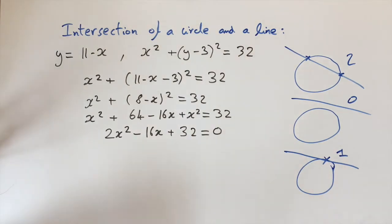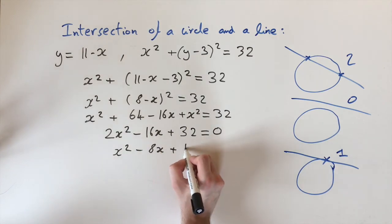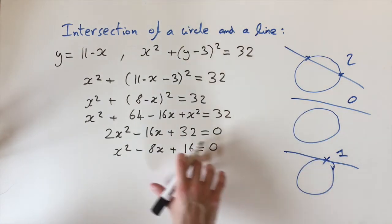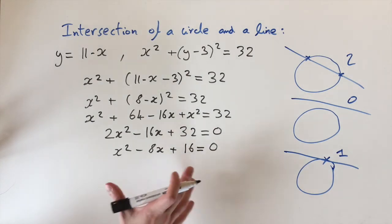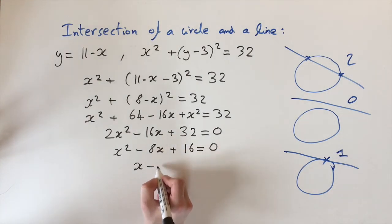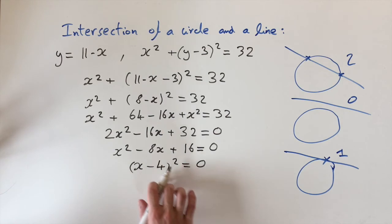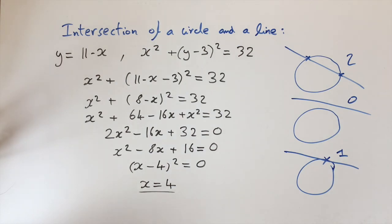All terms are multiples of 2, so we divide through by 2, giving x squared minus 8x plus 16 equals 0. This factorizes as x minus 4, all squared, equals 0. This is interesting because we have a repeated solution: x equals 4 is the only solution. So we're in the case where we have only one place of intersection — meaning this line is actually a tangent to this circle.